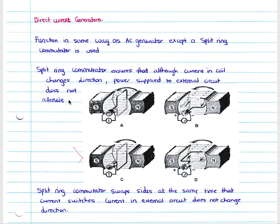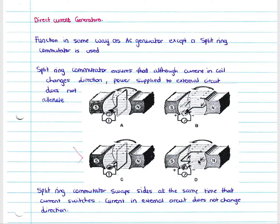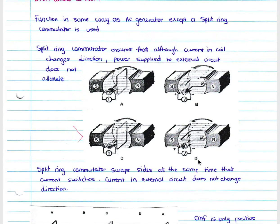If we look quickly at our generator, we have a movement of current away from us in the white part of the coil and towards us in the black part. At 180 degrees later, we have movement away from us in the black part and towards us in the white part. So there is still a change in direction in the actual coil; however, the split-ring commutator ensures there is no alternation in current in the external circuit.